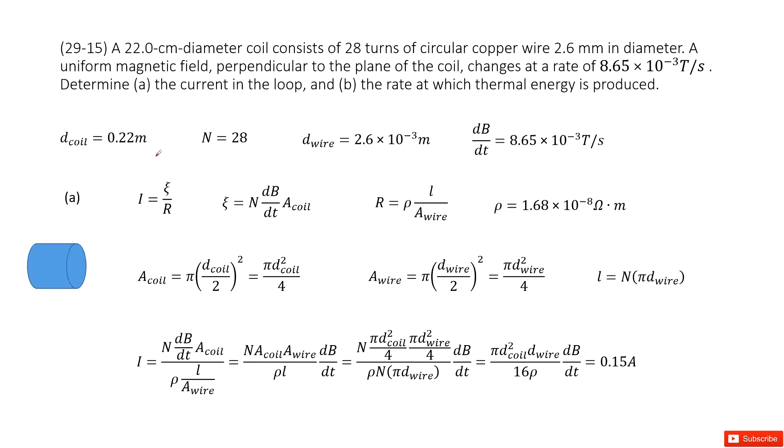Chapter 29 is about electromagnetic induction and Faraday's law. So we can see we have a coil. This coil's diameter is given, 0.22 meters. This coil consists of 28 turns of the wire. So how many turns for this coil? 28.